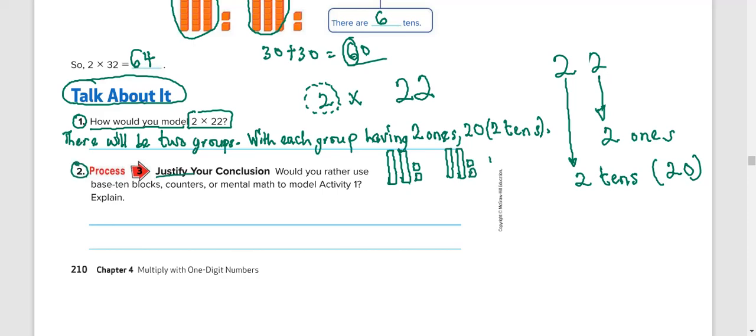Number 2 says, justify your conclusion. Would you rather use base 10 blocks, counters, or mental math to model activity 1? So since it's talking about model activity 1, and that we are using base 10 blocks, base 10 blocks will be preferred. Base 10 blocks is preferred since it is quicker and easier.